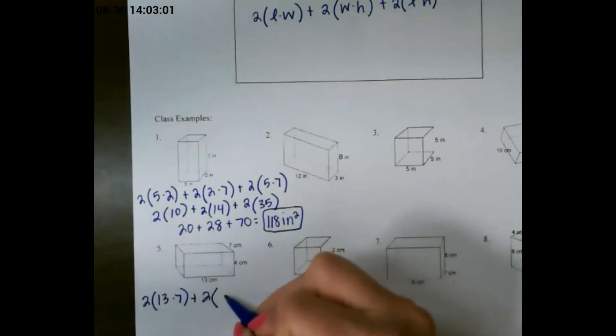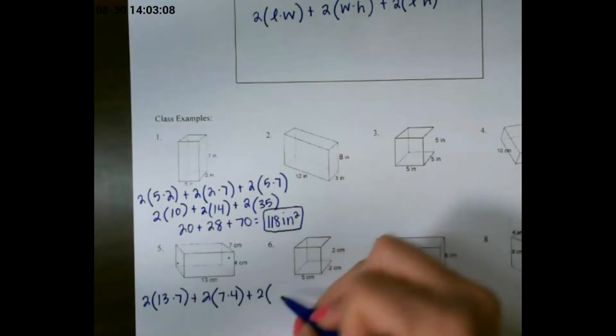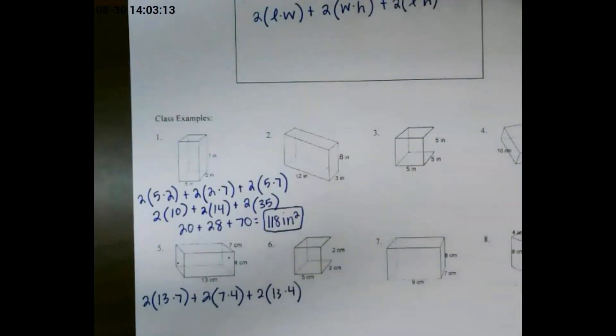Then we're going to do width times height, so 7 times 4. That gives us the two sides of our rectangle. And then length times height will give us the front and the back of our rectangular prism.